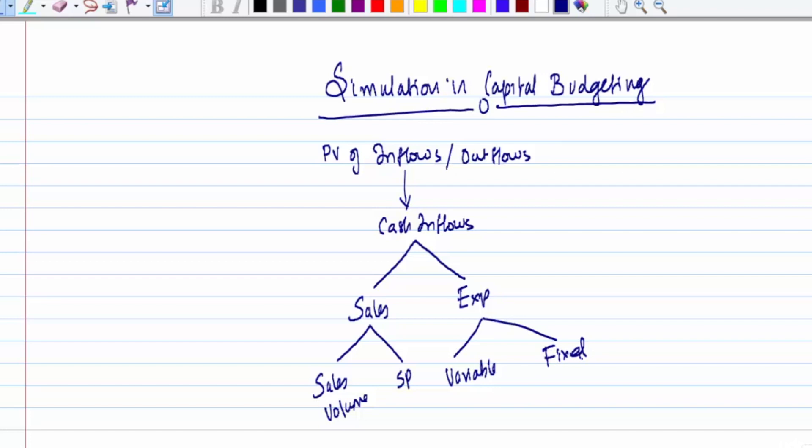While estimating cash flows, we should take all these factors into consideration. When it comes to fixed cost, we don't find any issue because it's fixed in nature. But items like sales volume, selling price, market demand, or variable cost can vary according to various reasons, so these items are basically uncertain in nature.